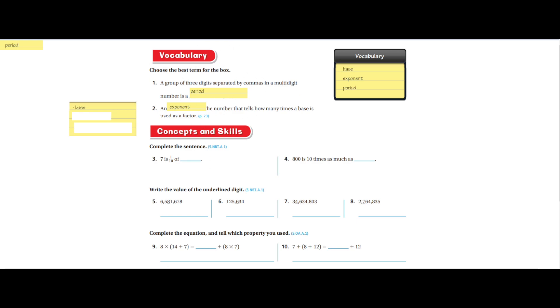So now let's go on to concepts and skills. Complete the sentence - I did write remember, one-tenth means times ten. So seven is one-tenth of seventy because seven times ten is seventy. And 800 is ten times as much as the opposite, which is 800 divided by ten, so 80.